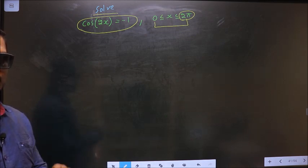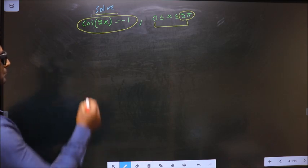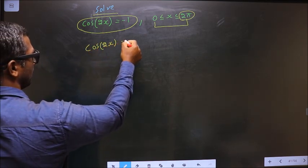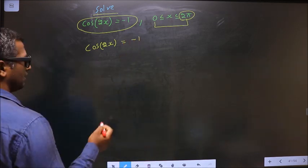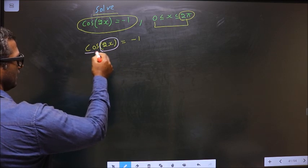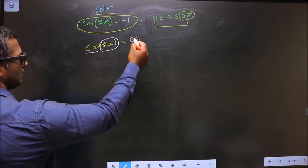Now the given equation is cos(2x) = -1. To get the values for 2x, here it is cos and here we have negative.